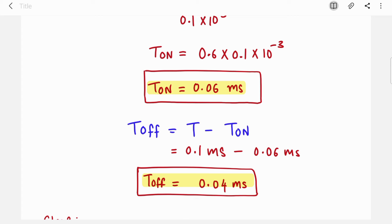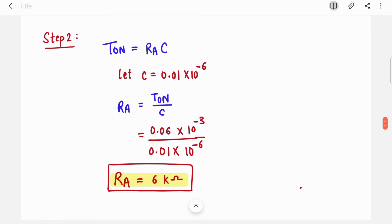To find out T_off, just subtract this T_on from time period. You will get T_off. So we got T_on and T_off. Now step 2: you should know the formula of T_on. T_on is RA into C.